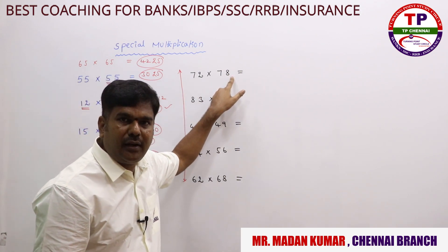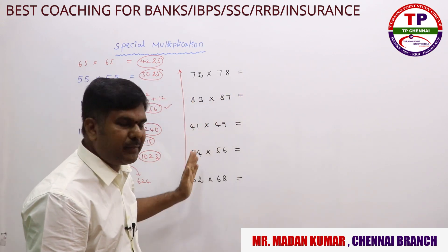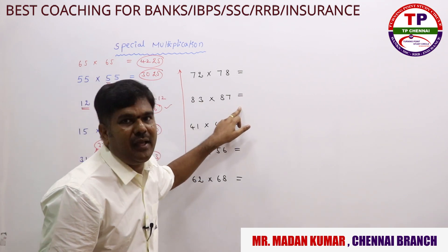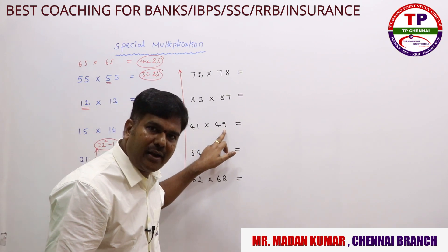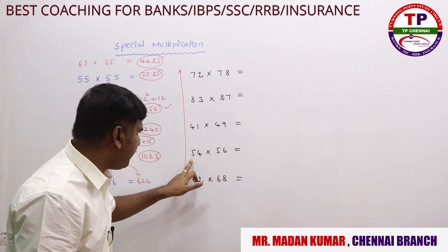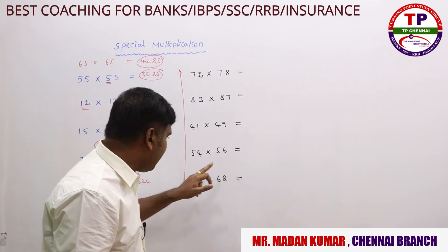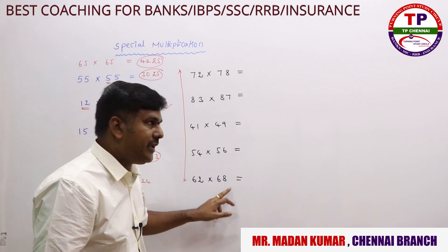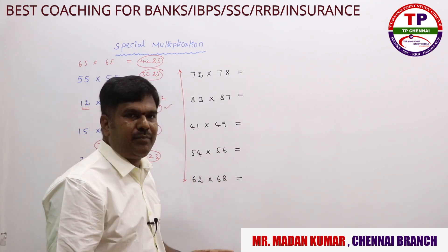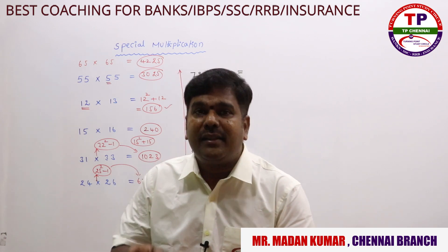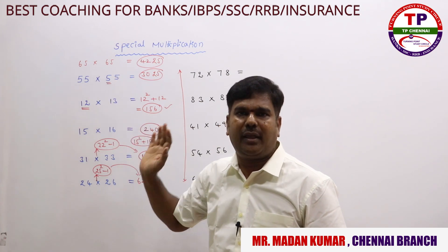The pattern is: the first digit is the same in both numbers, and the second digits sum to 10. For 72×78: 7 is common, 2+8=10. For 83×87: 8 is common, 3+7=10. For 41×49: 4 is common, 1+9=10. For 54×56: 5 is common, 4+6=10. For 62×68: 6 is common, 2+8=10. When the first digit is the same and the unit digits sum to 10, we can apply the same rule as for squares ending in 5.